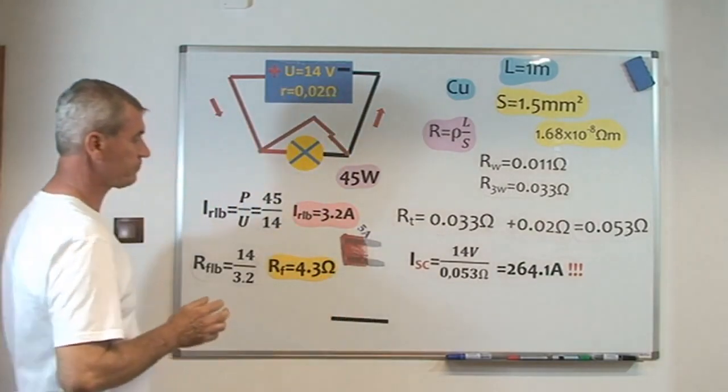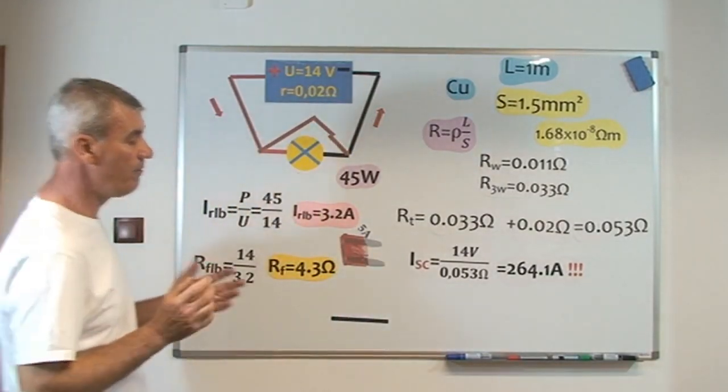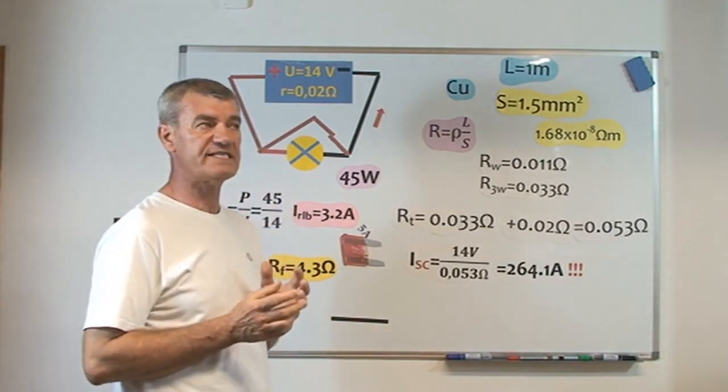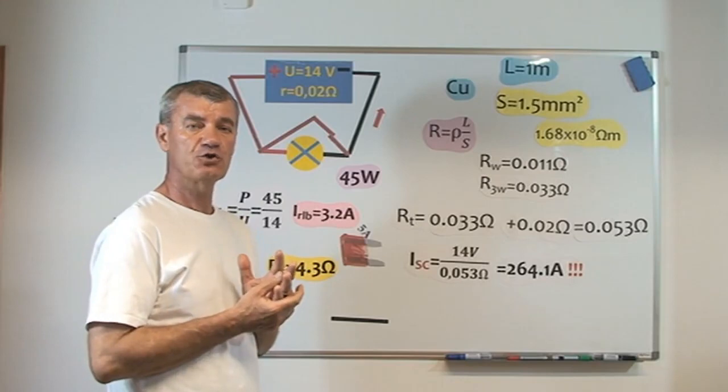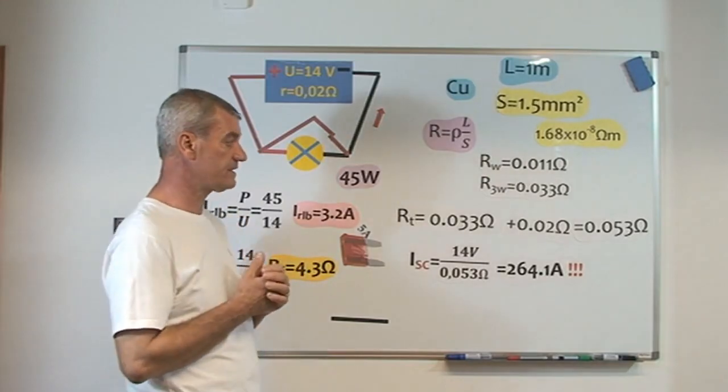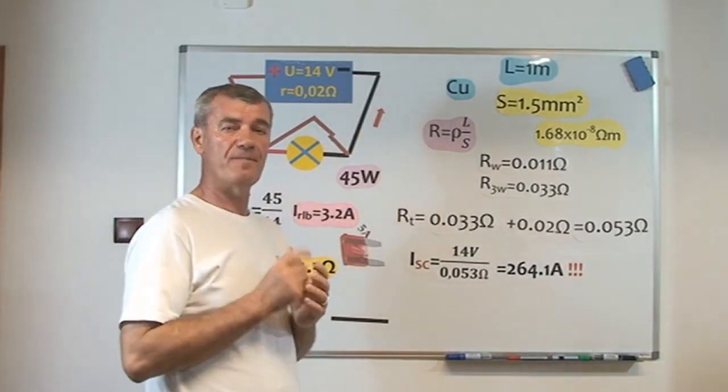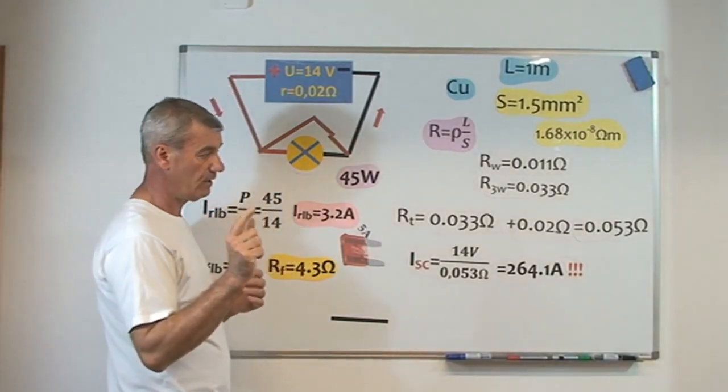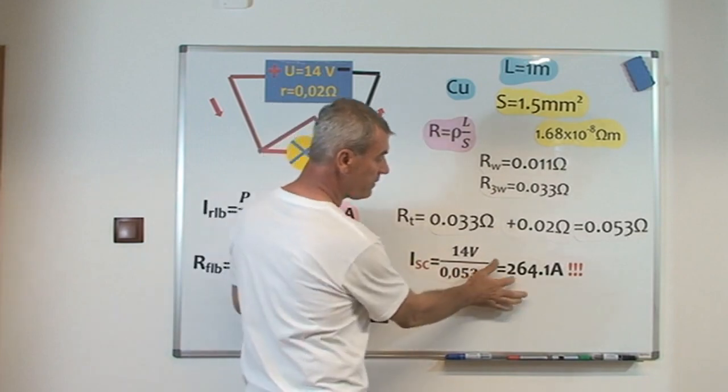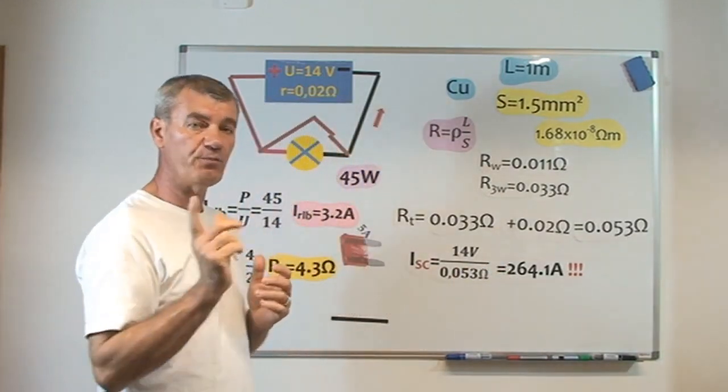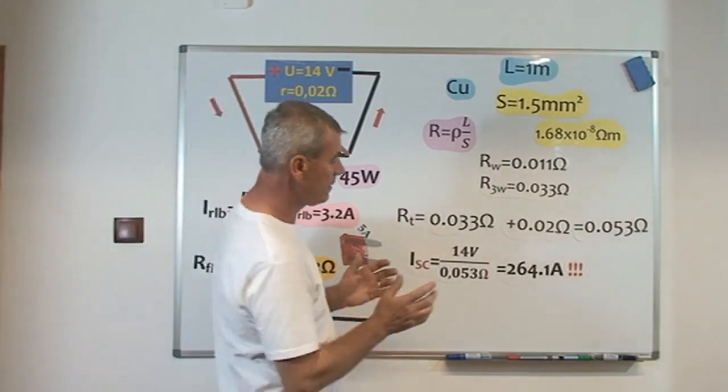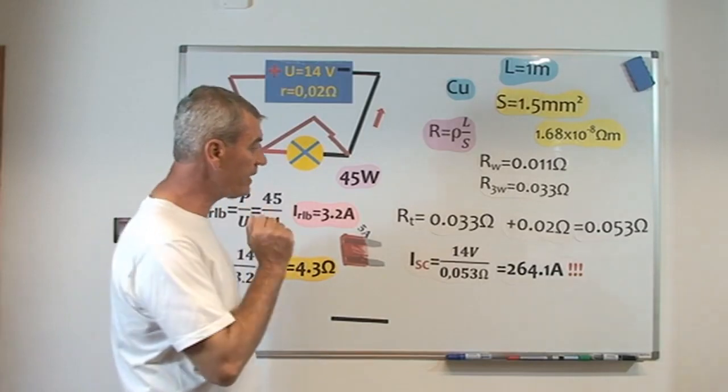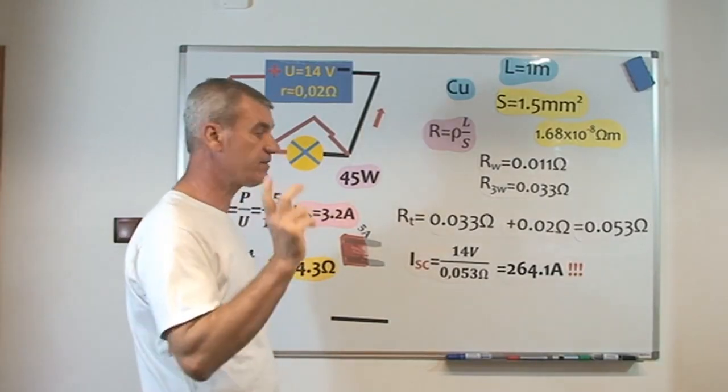If I were to compare how much current this is, I can say for a 60 watts light bulb supplied by 230 volts, 0.26 amps pass through the light bulb. Now, if I compare this value with 0.26 amps, this circuit current is equivalent to 1,000 light bulbs.